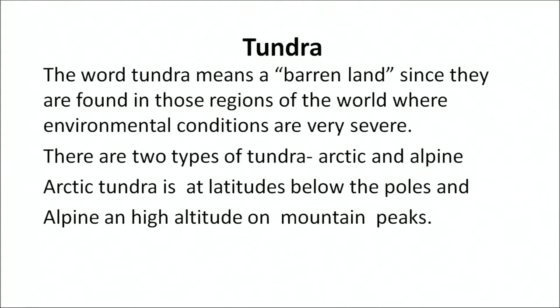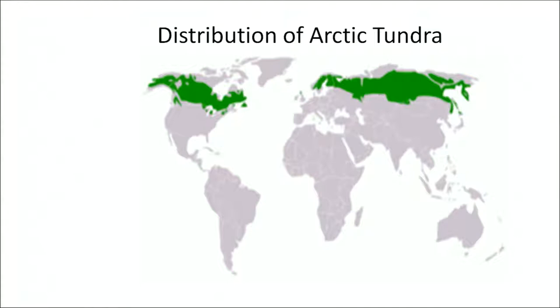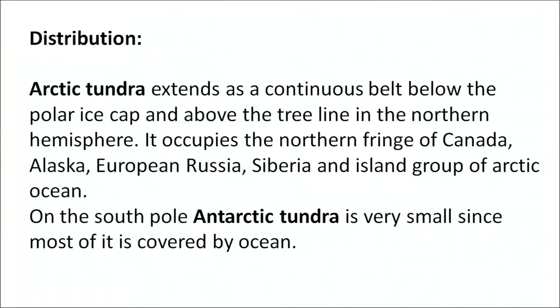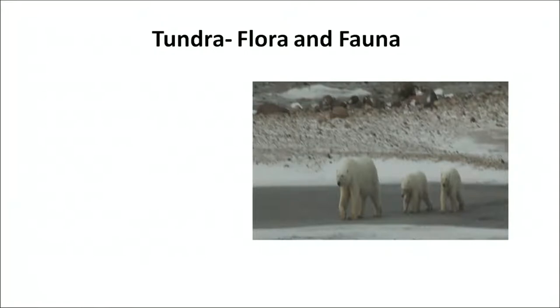Next we come to the most harsh condition biome, the tundra. The word tundra means barren land, and tundra regions are found where environmental conditions are very severe. There are two types of tundra: arctic and alpine. The arctic tundra is at latitudes below the poles, and the alpine tundra is found at high altitudes on mountain peaks. The arctic tundra extends as a continuous belt below the polar ice cap, above the tree line in the northern hemisphere. It occupies the northern fringe of Canada, Alaska, European Russia, Siberia and the island groups of the Arctic Ocean. The Antarctic tundra is very small since most of the south pole is covered with ocean.